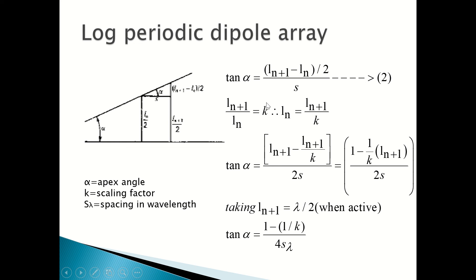Since l_(n+1)/l_n = k (a constant), we have l_n = l_(n+1)/k. Substituting into the tan(α) expression: tan(α) = [l_(n+1) - l_(n+1)/k] / (2s), which simplifies to tan(α) = l_(n+1)(1 - 1/k) / (2s). Considering the active region where the element length equals λ/2, substituting gives tan(α) = (1 - 1/k) / (4s/λ), where 4s/λ is equivalent to s/λ scaled by 4.